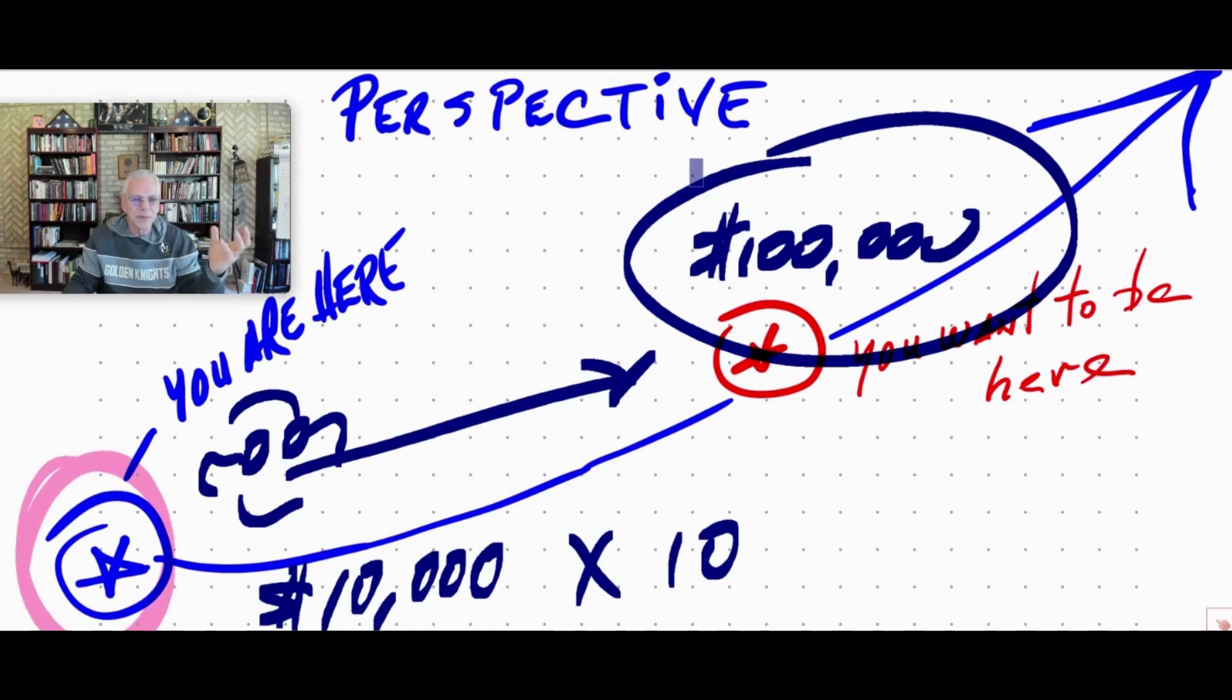Why was I thinking with a scarcity mentality? It's the same objective, but you were looking up the hill. Now you're there and you're looking down the hill.